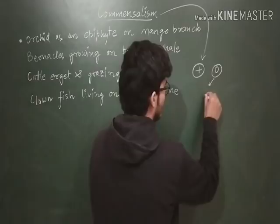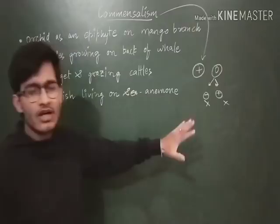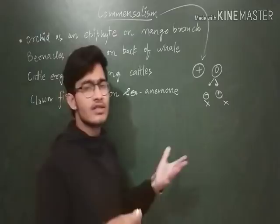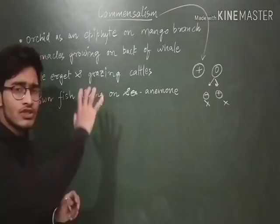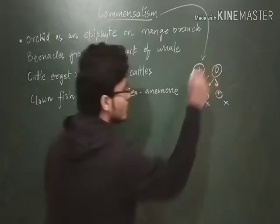It means the other species remains neutral — zero — it is not harmed and it is not benefited as well. So there will be no major effect; if there is some effect, that will be totally negligible. We are clear with the definition and clear with the symbols: plus and zero is the symbol for commensalism.